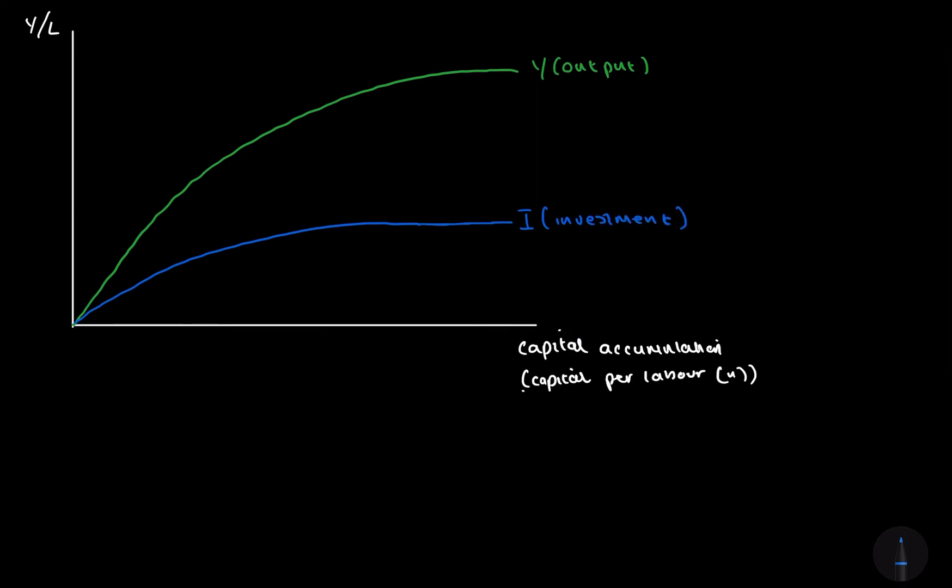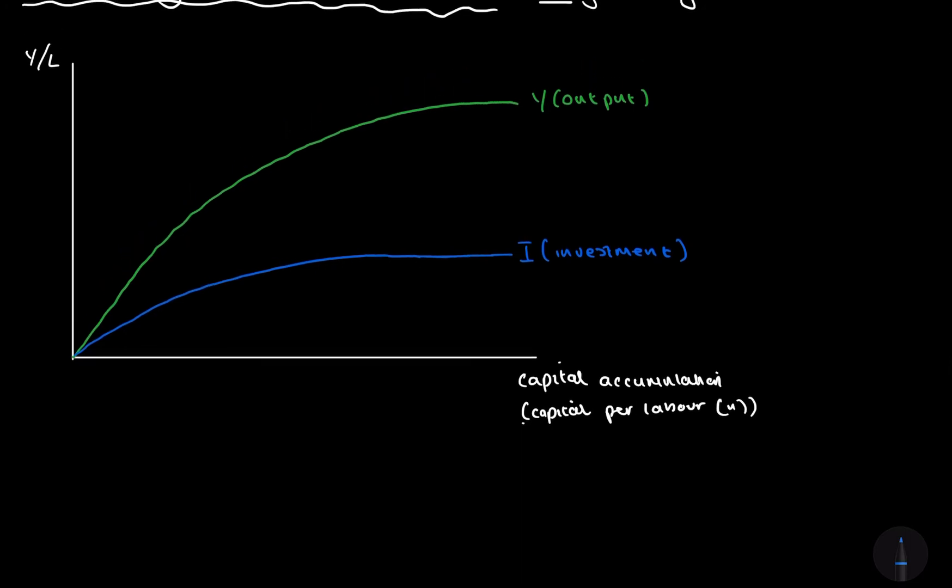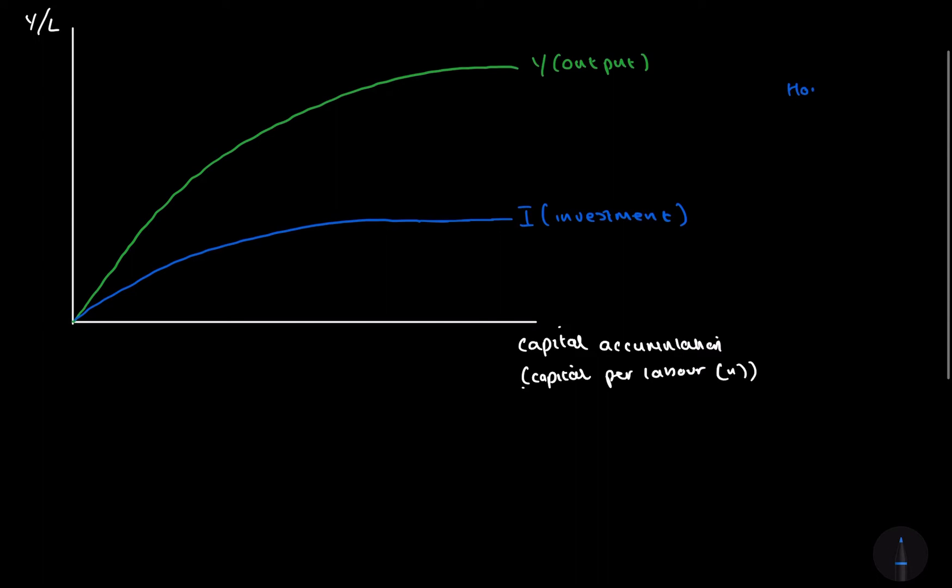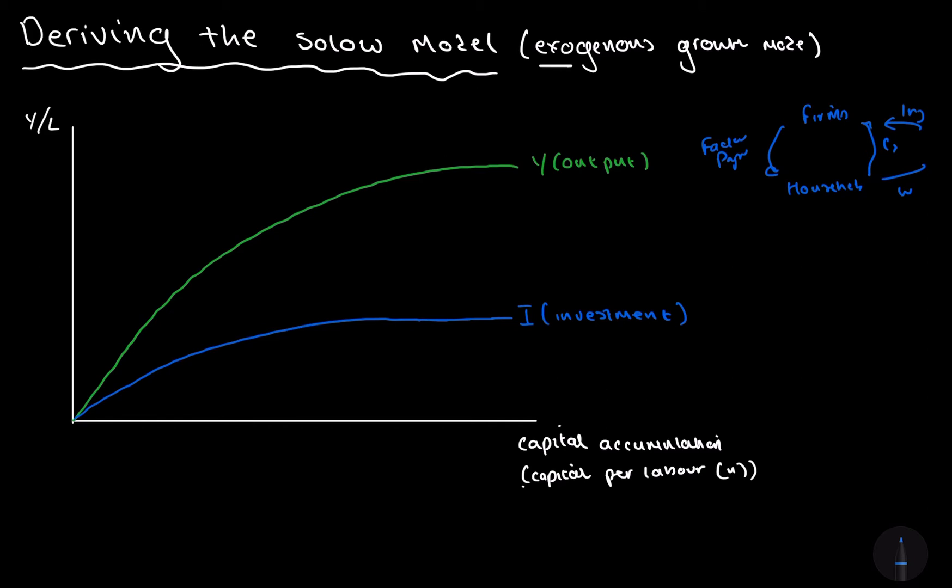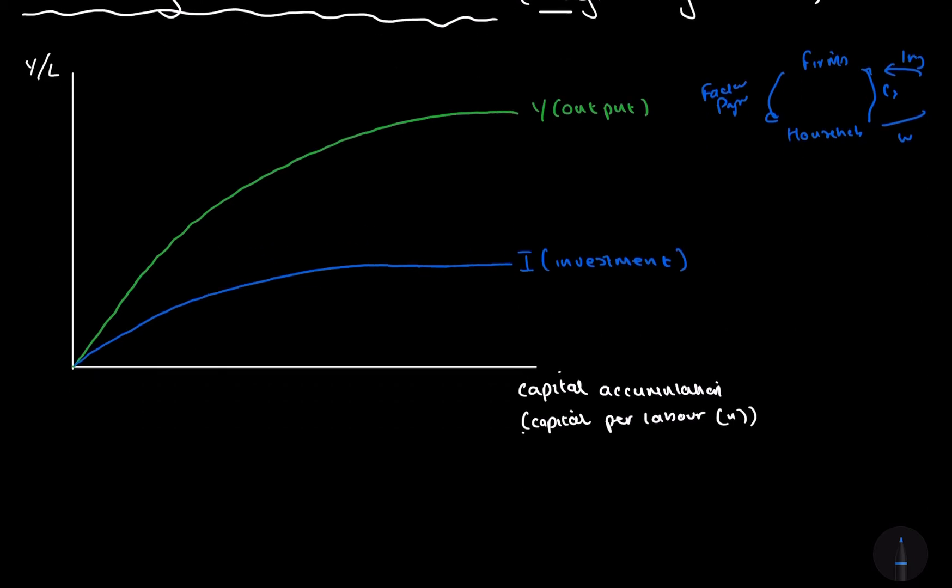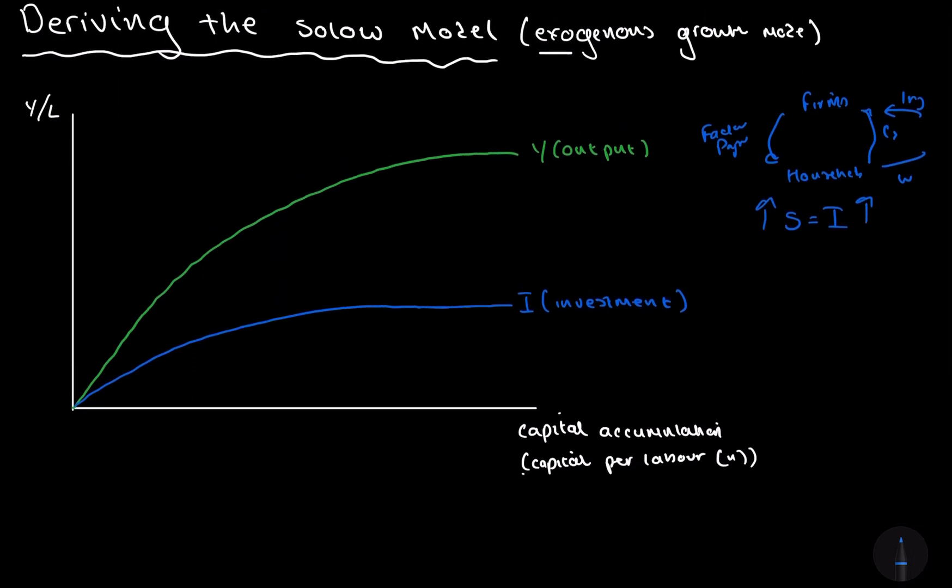Since savings are increasing, as we know from the circular flow, where we have households and firms, households get paid through factor payments, and then this goes back in domestic consumption. Obviously, we have the withdrawals and the injections. What we know from especially from classical economics is that savings always equals investment. Therefore, if we have an increase in savings, we have an increase in investment. This is just simply due to the circular flow model.